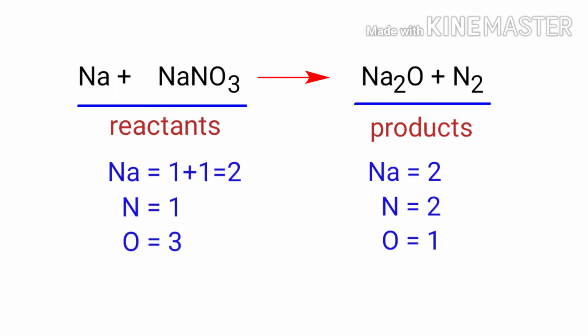In this equation, we need to balance the nitrogen atoms first. To do this, we need to put a coefficient of 2 in front of NaNO₃. The nitrogen atoms are balanced.